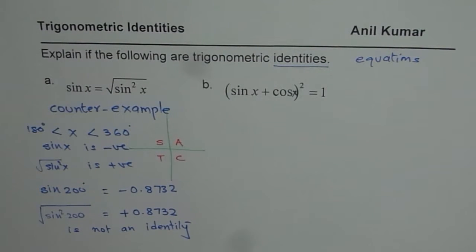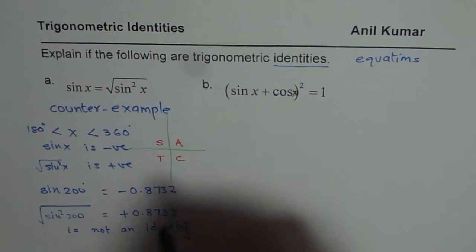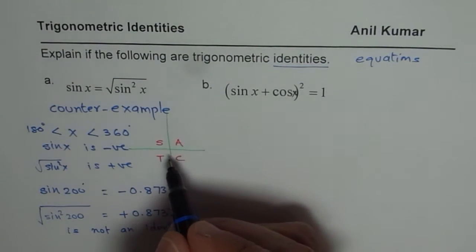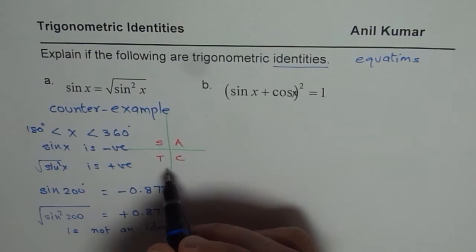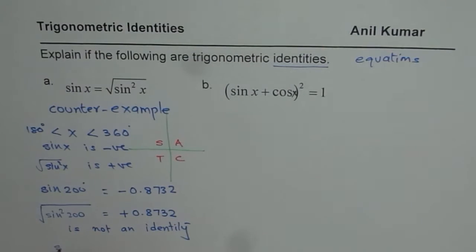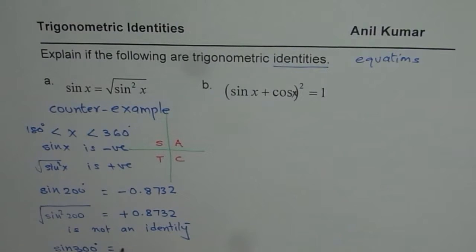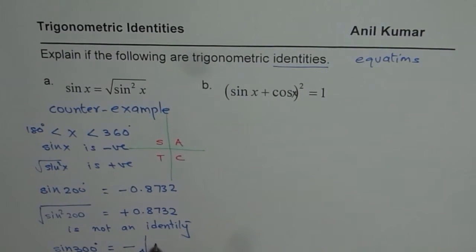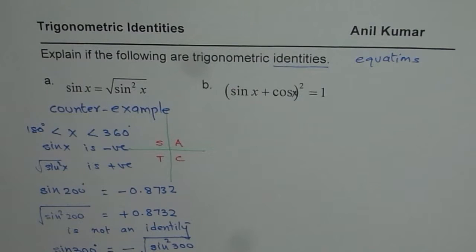I hope this point is clear to you. You could take any value. Good values for you to take could be those which form special triangles. For example, what is sin of 300 degrees? You will find it is actually equals to negative of square root of sin square of 300. That is what you will find, so it is not true.